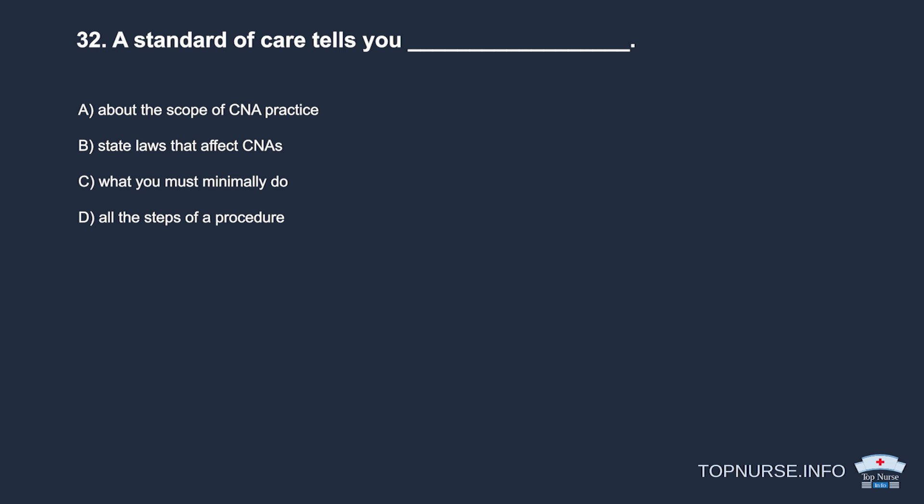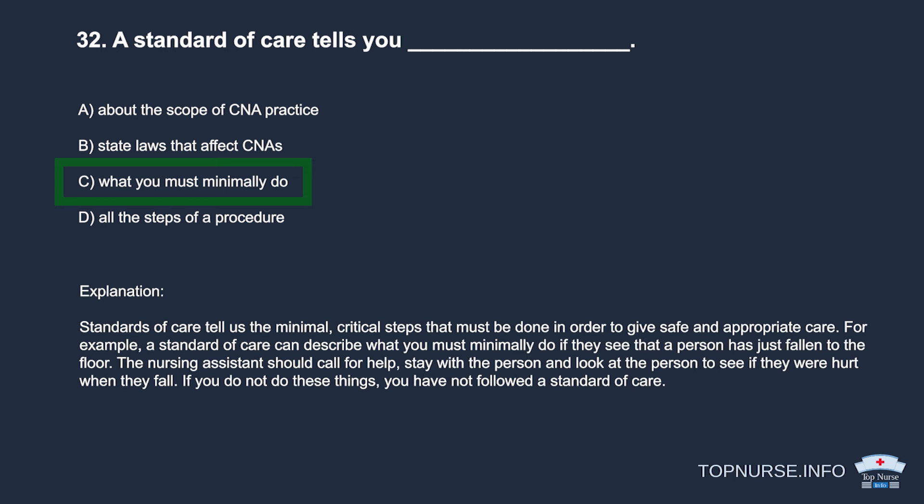Question 32: A standard of care tells you: a. About the scope of CNA practice. b. State laws that affect CNAs. c. What you must minimally do. d. All the steps of a procedure. Correct answer: c. What you must minimally do. Standards of care tell us the minimal critical steps needed to give safe and appropriate care. For example, if a patient falls, the nursing assistant must call for help, stay with the person, and check for injuries.